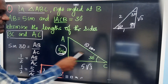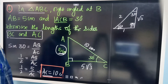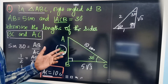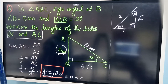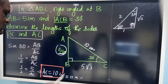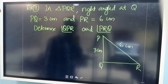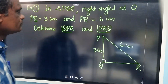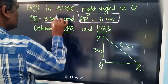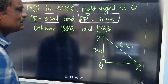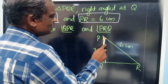Initially, only one side and one acute angle were given, and we found the other two sides. In trigonometry, if you are given one side and one acute angle, then any side of the triangle can be calculated. Now in triangle PQR, with right angle at Q, PQ equals 3 centimeters and PR equals 6 centimeters. We need to determine angle QPR and the other acute angle.